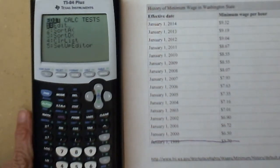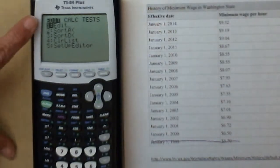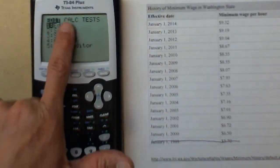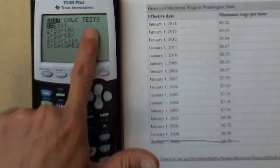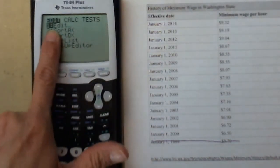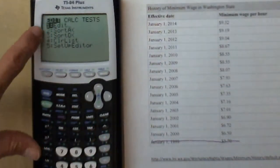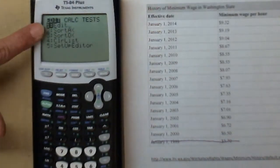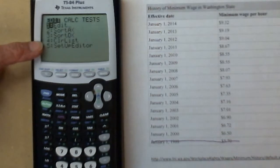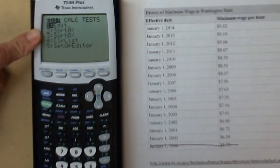The first thing you do is you go to STAT, and then you need to edit. That's the very first thing. Across the top, there are three different menus: edit, calc, and tests. We're going to edit, and then within the edit menu, we're going to edit first. We might use that clear list to get rid of data, but there's another way.